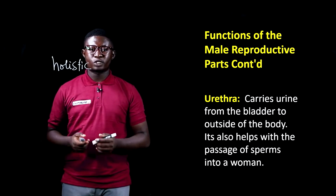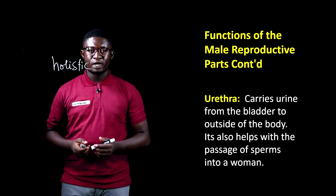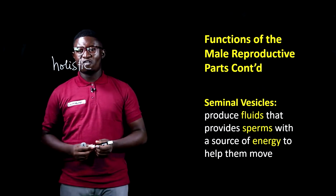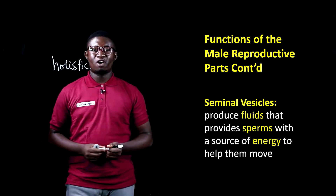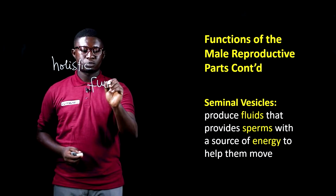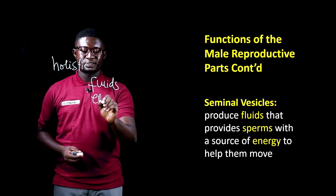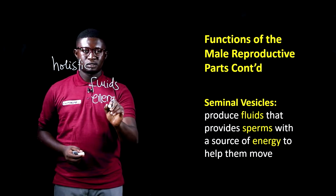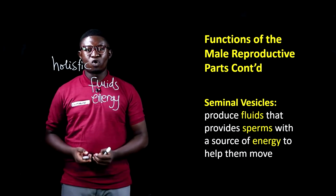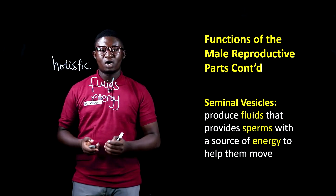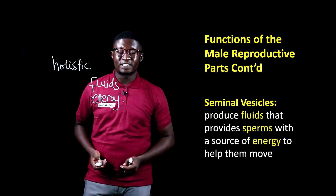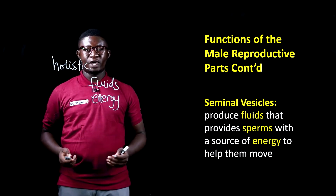So the urethra transports sperms and urine from the male reproductive system. The seminal vesicles help produce fluids and also energy, which will help the sperms move. They play a very key role in the development of the sperms — they produce fluids and also a source of energy so that the sperms can move.